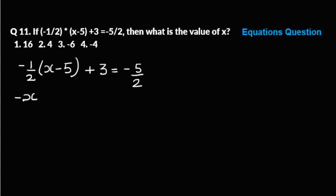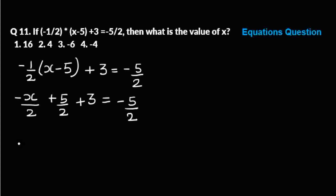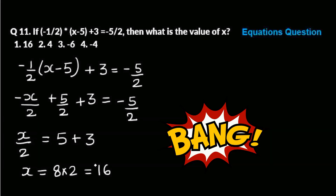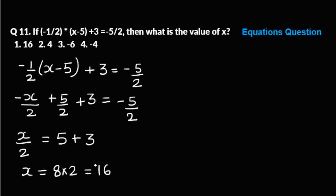Expanding: minus x by two plus five by two plus three equals minus five by two. Taking x by two to the right hand side and bringing minus five by two to the left hand side, you get x by two equals five by two plus five by two minus three, which gives ten by two minus three, so x equals eight into two, which is sixteen. Our answer is the first option.